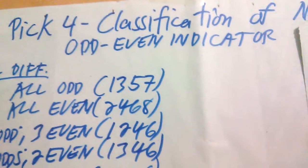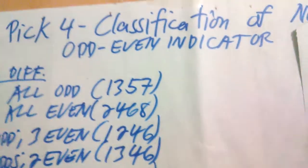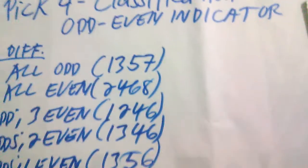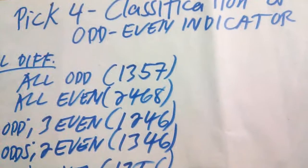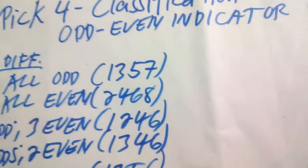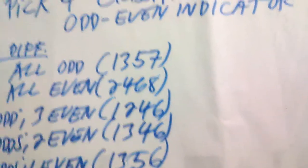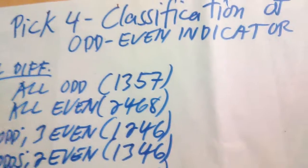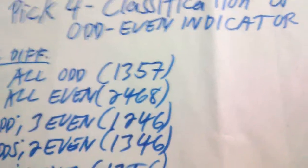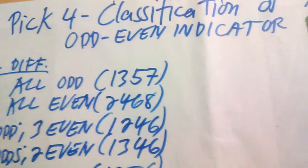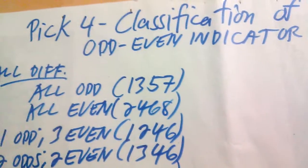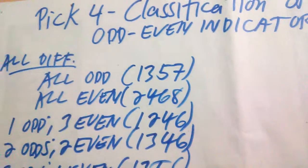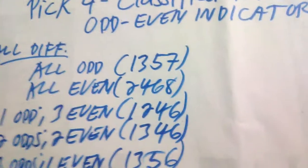Today we're going to discuss about the classification of number combinations, the odd-even indicator, and of course the low-middle-top indicator, or the LMT. Before we proceed, I would like to thank again those who have been watching my videos and, of course, my subscribers out there. Thank you for watching and for your support.